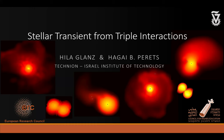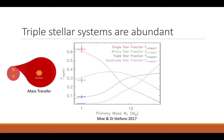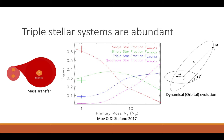Why study triple systems? Apart from bringing a fun challenge and more interest to our life, they can be very important because depending on the masses, they can be even more common than binary systems. They are also more likely to interact with each other by mass transfer, such as the common envelope or other dynamical interactions — for example, the Kozai-Lidov mechanism.